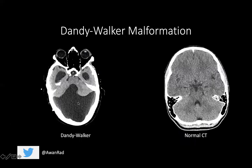Finally, the Dandy-Walker malformation is when you have vermian agenesis and a posterior fossa cyst that communicates directly with the fourth ventricle. Notice here, this is a huge posterior fossa cyst that communicates directly with the fourth ventricle. On a normal CT brain, you have the fourth ventricle, the midline vermis, and the right and left cerebellar hemispheres — notice how abnormal the Dandy-Walker malformation appears in comparison.